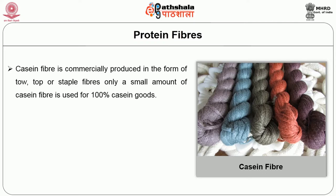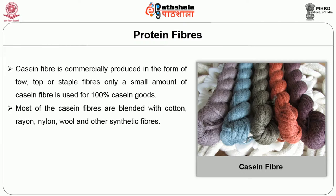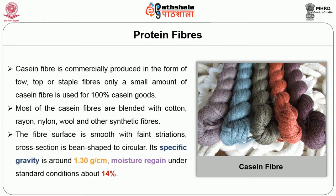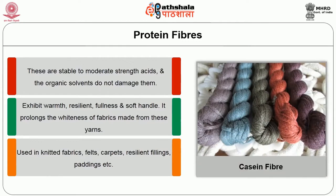Casein fiber is produced in the form of tow, top or staple fibers. Only a small amount of casein fibers is used for 100 percent casein goods. Most casein fibers are blended with cotton, rayon, nylon, wool and other synthetic fibers. The fiber surface is smooth with faint striations. Cross section is bean shaped to circular. Its specific gravity is around 1.3 grams per cubic centimeter. Moisture regain under standard conditions is about 14 percent. Casein is sensitive to alkalis, stable to moderate strength acids, and organic solvents do not damage them.